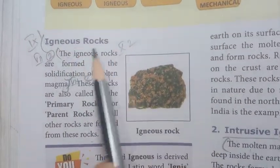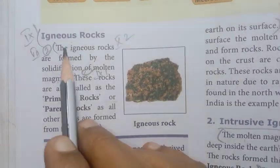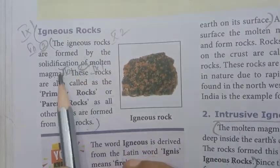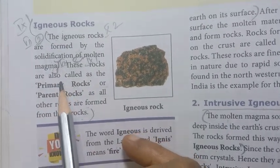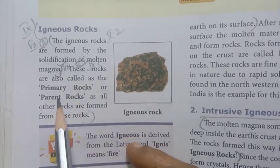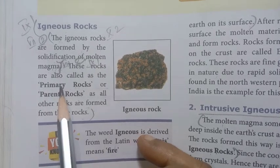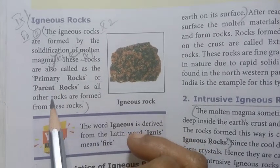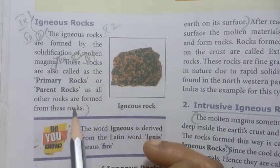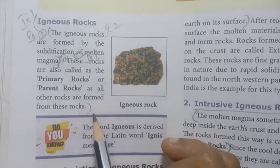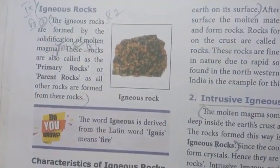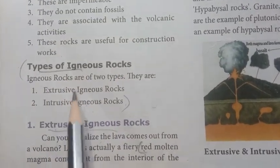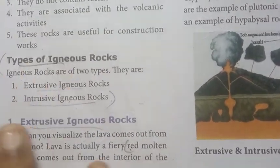Igneous rocks — already we have seen these. Igneous rocks are formed by the solidification of molten magma. They are also called primary rocks or parent rocks. There are two types: extrusive igneous and intrusive igneous.